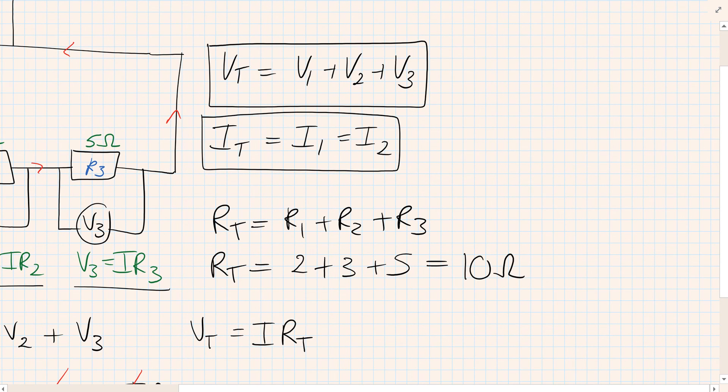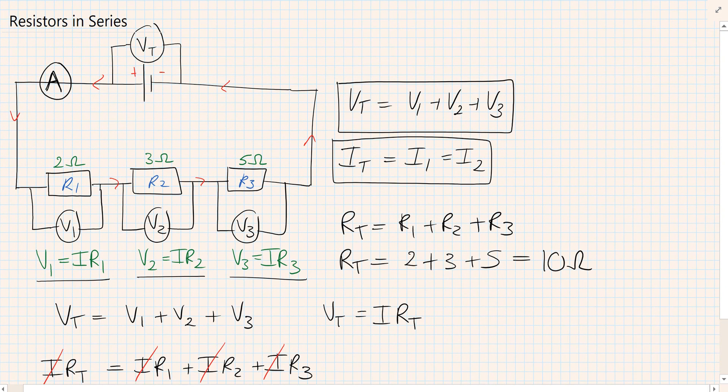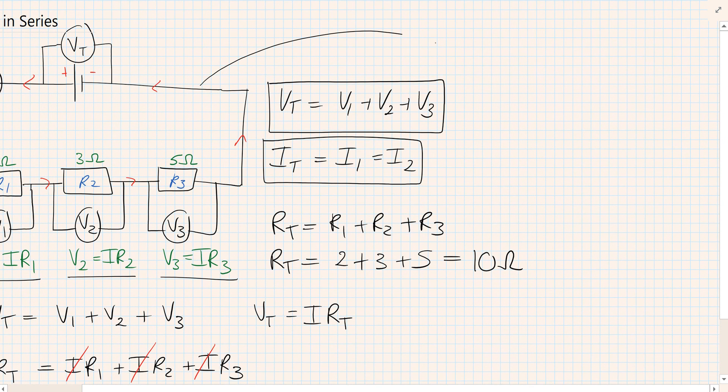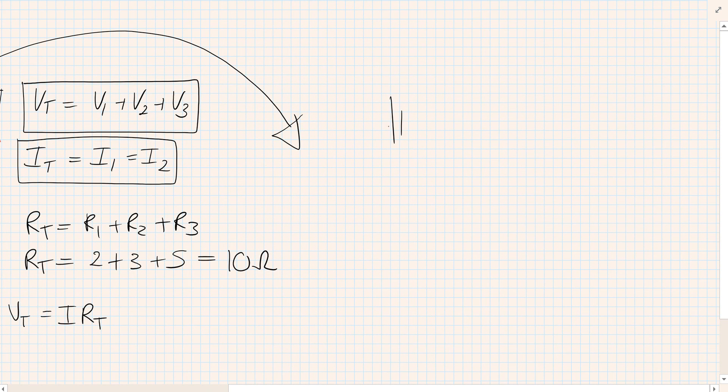So our circuit, which has three resistors in it, that entire circuit could be reduced down to an even simpler circuit with one single resistor that has a value of 10 ohms.